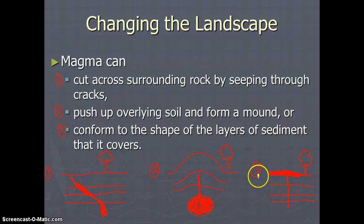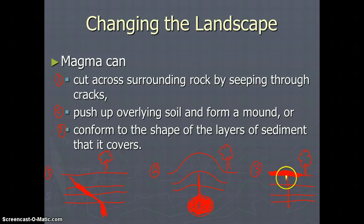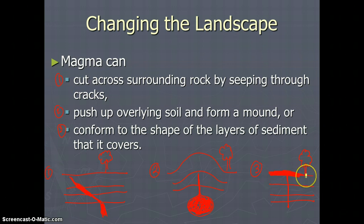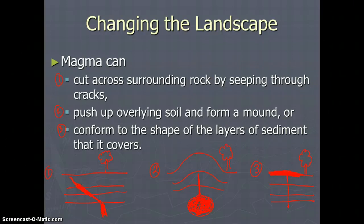The other thing magma can do is conform to the shape of the layers of sediment that it covers — it's going to take the shape of the land around it. Sometimes, if it's really runny magma, it can cut through layers of rock, then spill out and take the shape of the land. If the land is flat, the magma will lay flat onto the ground. You might want to draw these three pictures on your paper to help you remember the ways magma can change the landscape.